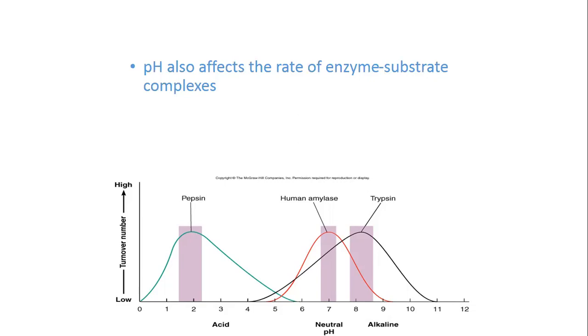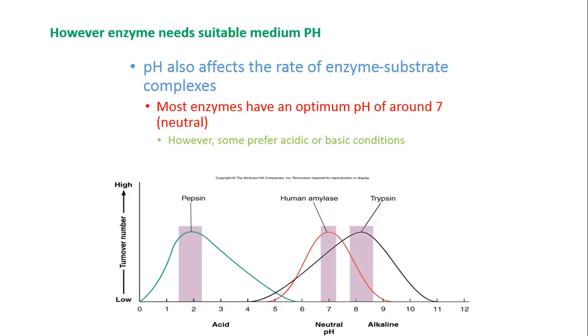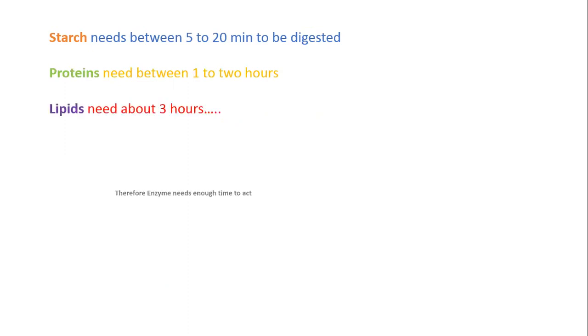pH also affects the rate of enzymatic enzyme substrate complex. Most enzymes have an optimum pH of around seven, which is neutral. However, some prefer acidic or basic conditions. So that, however, enzyme needs suitable medium pH. Starch needs between five and 20 minutes to be digested. Proteins need between one and two hours. While lipids need about three hours.